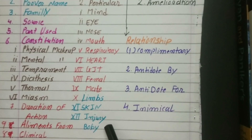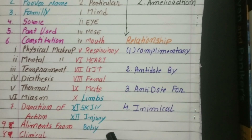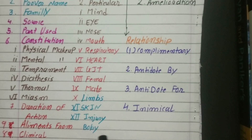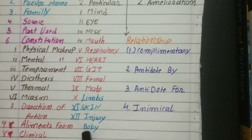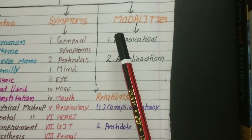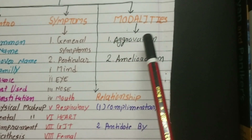For acute remedies or injury group remedies — for example like Ruta, which is particularly related to injuries — you can write a particular heading for injury. And if a drug like Cina or Chamomile is given for babies, you write the baby symptoms separately as well.